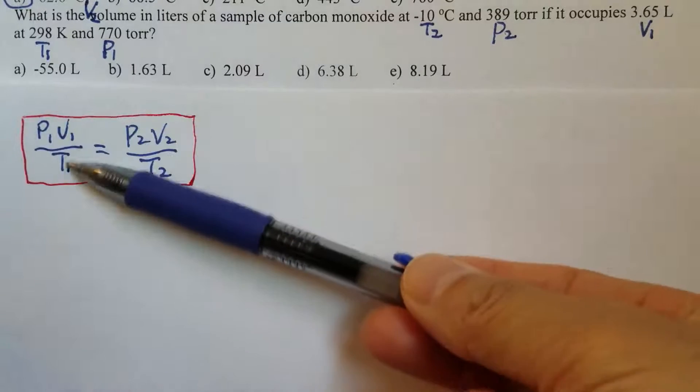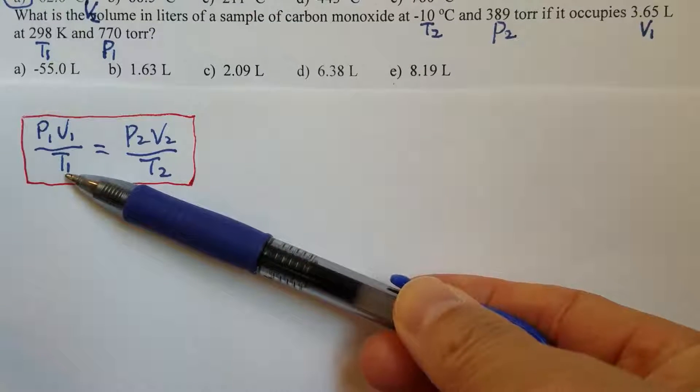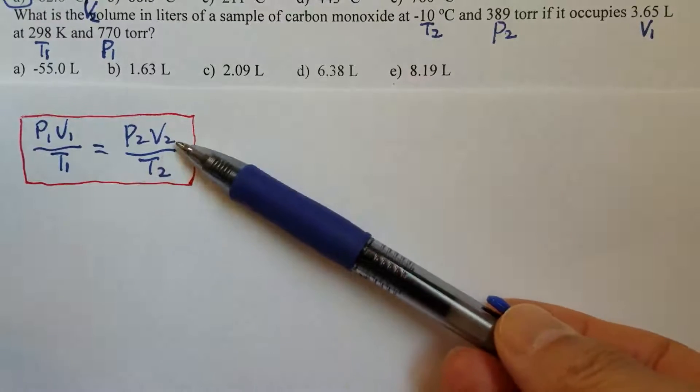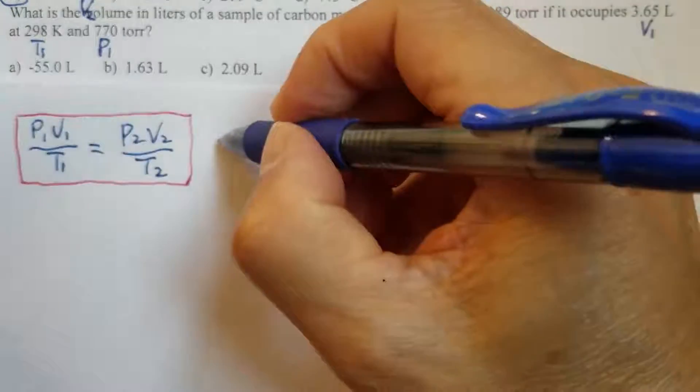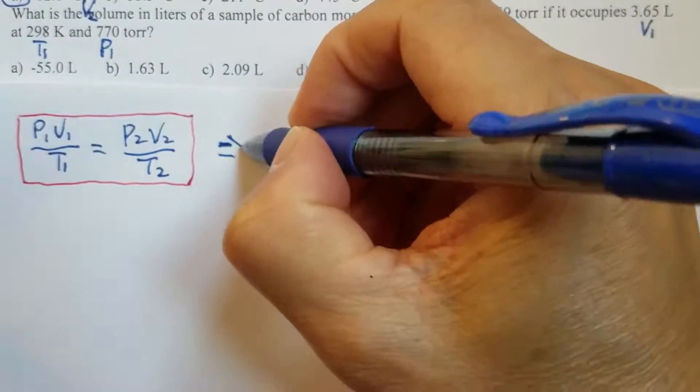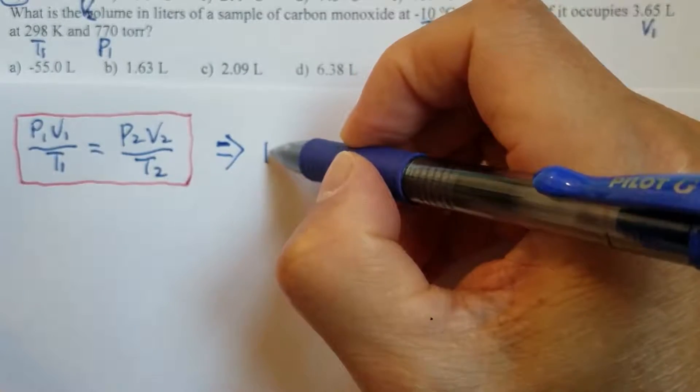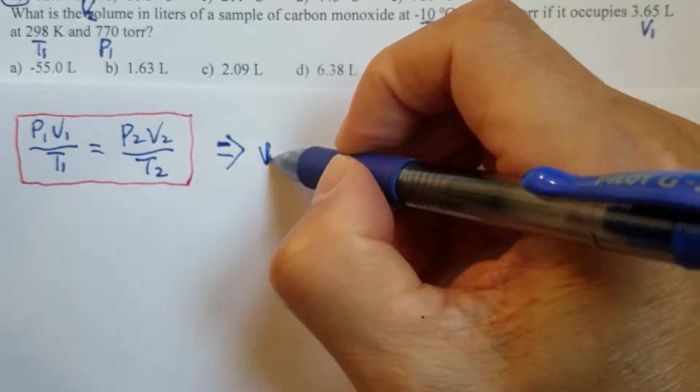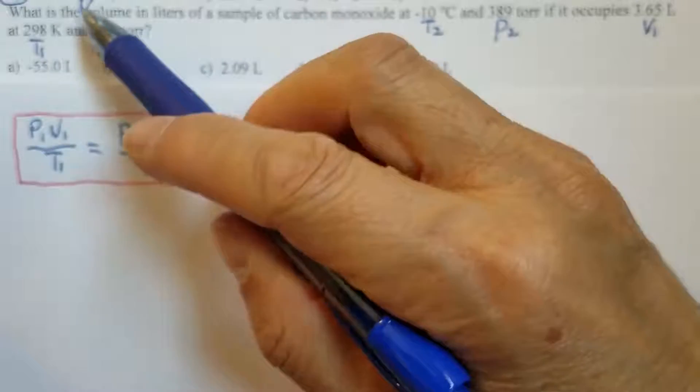So, this shows the key equation for combined gas law. From this key equation, we should be able to calculate V2, the one we need to work on.